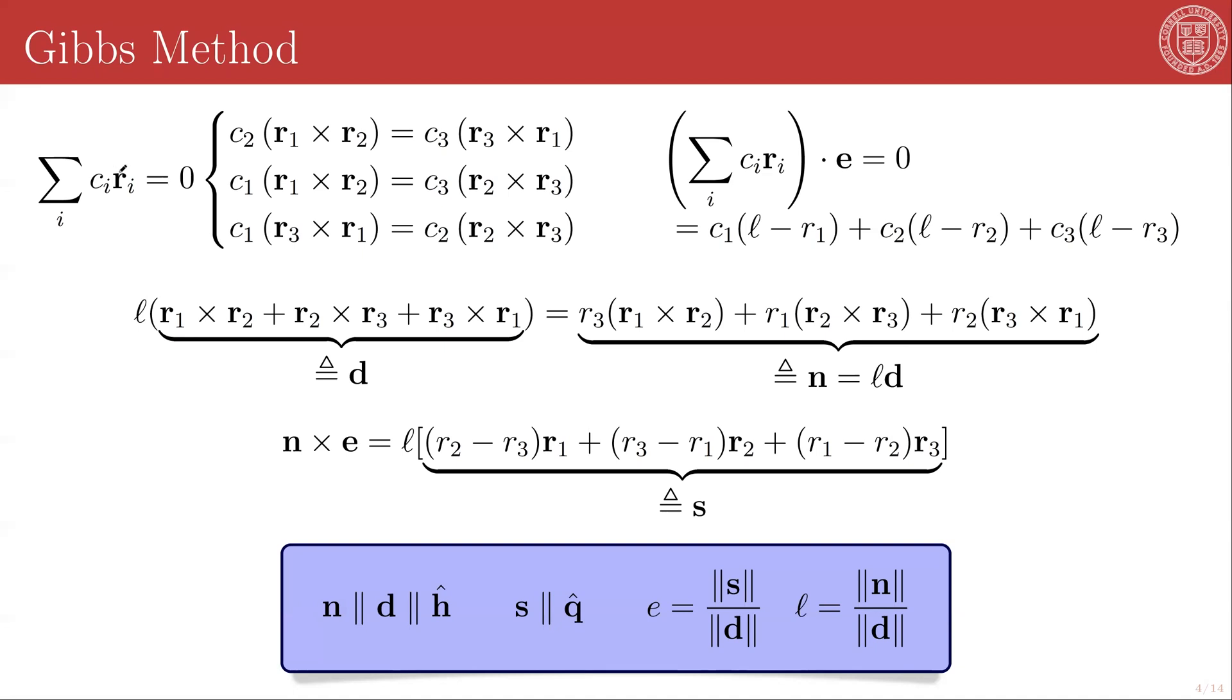We've already established that these are linearly dependent vectors, and so their weighted sum is equal to zero. If we take this expression and we cross it with each of the three vectors in turn, we will get these three sets of relationships. If we instead take this linear summation and dot it with the eccentricity vector, this dot product has to equal zero because the original sum equals zero. And we can also show that this dot product leads to this expression.